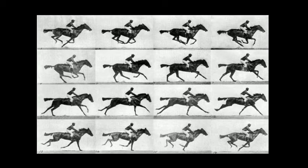You would display one frame, then another, then another, just a fraction of a second apart, and you would actually see the animation of the horse's running. This was the intermediate step between photography and motion pictures like we have today.